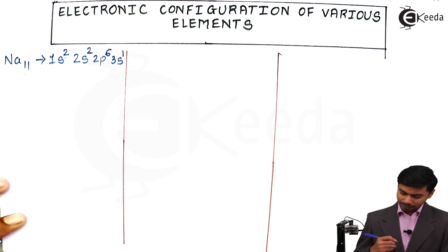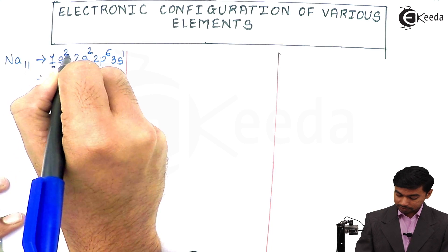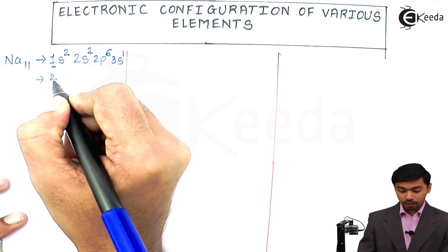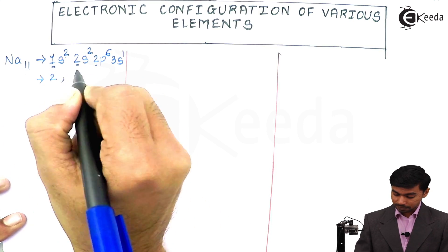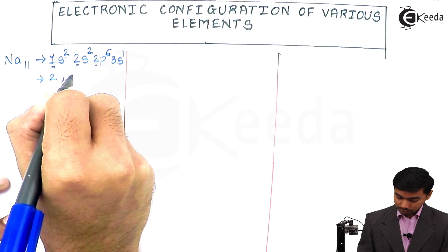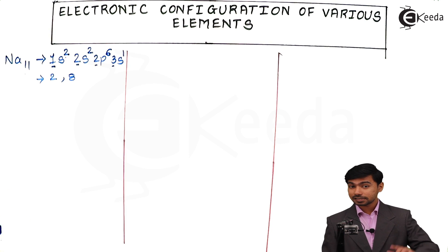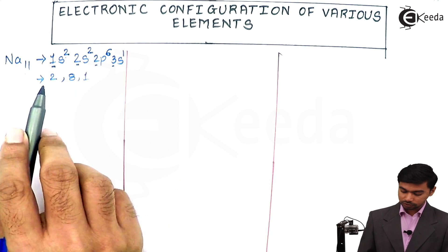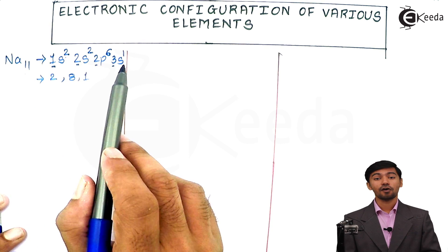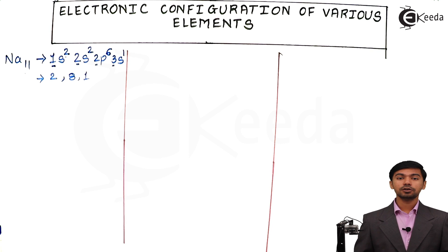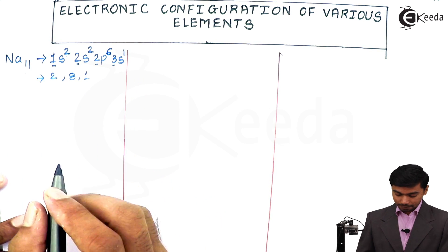The same result can be expressed in a simpler shell-based notation. The first shell holds 2 electrons, the second shell holds 6 + 2 = 8 electrons, and the third shell holds 1 electron. So the electronic configuration of sodium in shell notation is 2, 8, 1. In full subshell notation, this is 1s², 2s², 2p⁶, 3s¹.